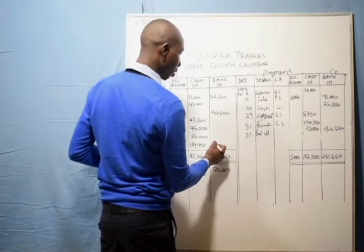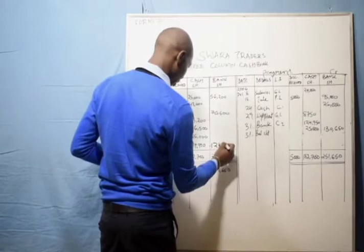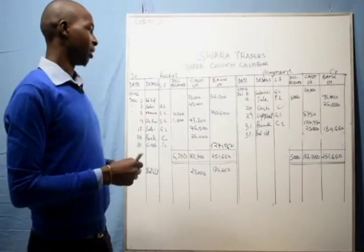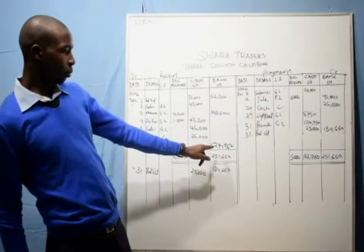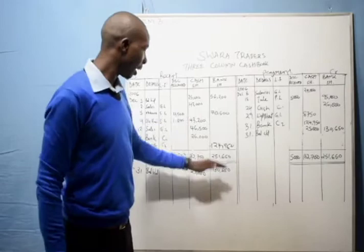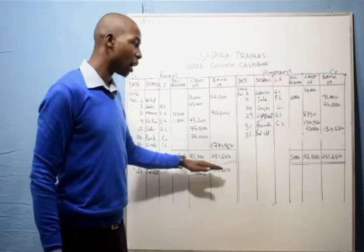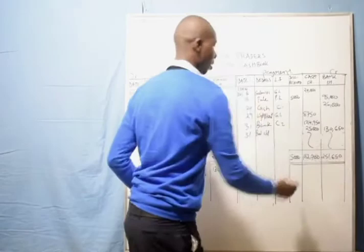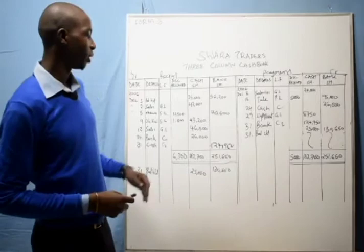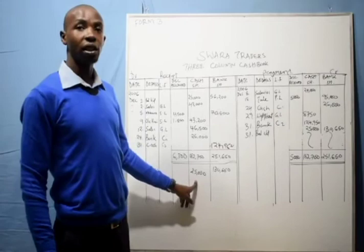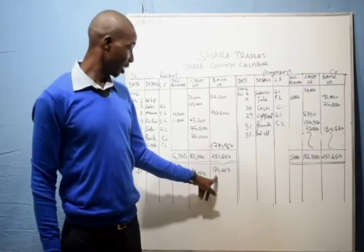So the amount banked — 124,950 — has been taken out of cash and inputted into the bank column. We then add all the columns. Once totaled, we draw a double line. If there is any remaining space, we fill it so that nobody can come and record any transaction that would affect the figures. As we were told, 25,000 is the balance left in cash, and we have 130,650 to be carried forward. Thank you very much, I hope you enjoyed the lesson.